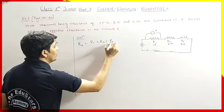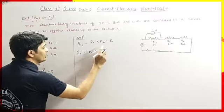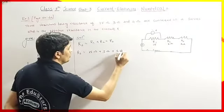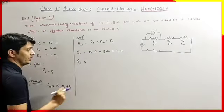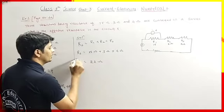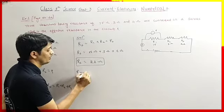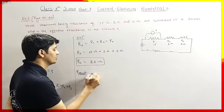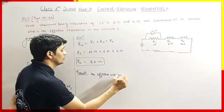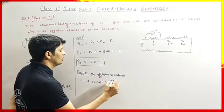RS = R1 + R2 + R3. Substituting values: RS = 15 ohm + 3 ohm + 4 ohm. So 15 plus 3 is 18, and 18 plus 4 is 22. Therefore, 22 ohm is the effective resistance in the circuit.